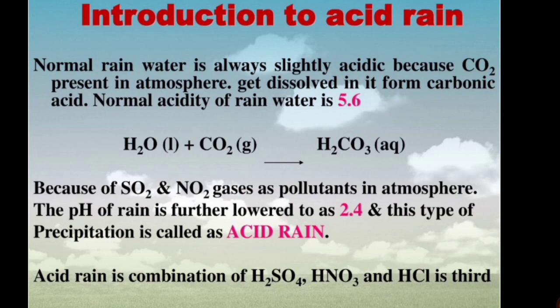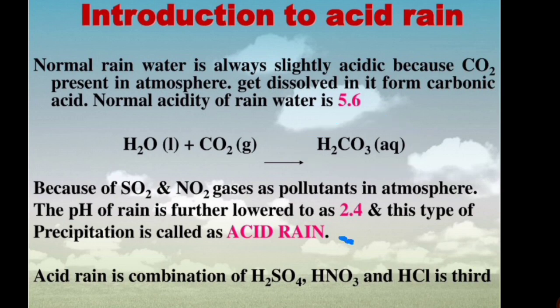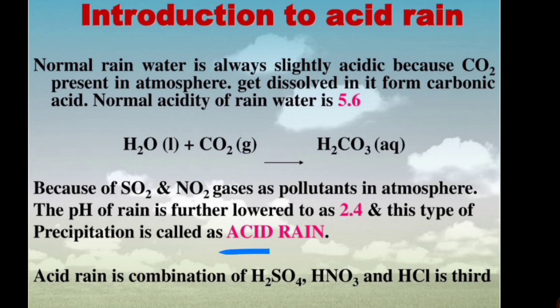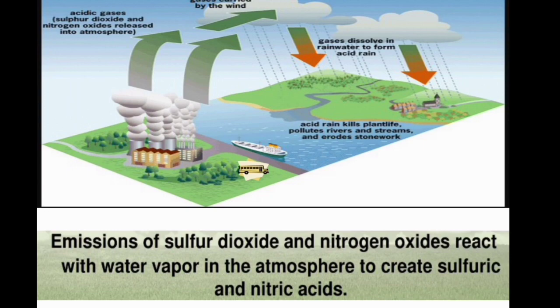When water molecules react with carbon dioxide gas, they form carbonic acid. But when do we call it acid rain? When the pH is as low as 2.4, it is called acid rain, because gaseous pollutants like sulfur dioxide and nitrogen dioxide present in the atmosphere, when mixed with precipitation, form acid rain. This combination makes three different types of acids: sulfuric acid, nitric acid, and hydrochloric acid.